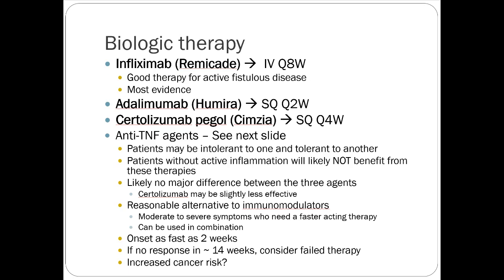Certolizumab or Cimzia is a newer drug, a SQ injection every four weeks, also a TNF agent, studied in combination with methotrexate. It's not uncommon for a patient to respond well to one TNF agent and not another, so if you fail one, try another. Patients without active inflammation will likely not benefit from these therapies.